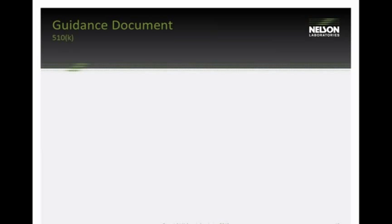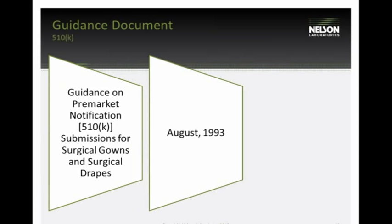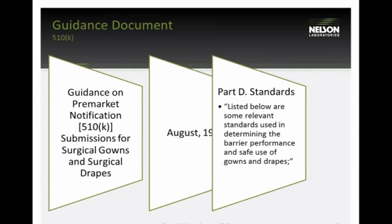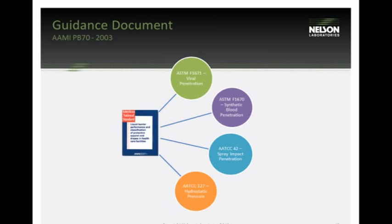Now we'll discuss guidance documents that reference these tests. The FDA's 510(k) guidance document, published in 1993, lists three of the four tests — ASTM ES21 and ES22, now called ASTM F1670 and F1671, plus hydrostatic spray. About ten years later, AAMI published the ANSI/AAMI PB70 document, which gives more direction on pass/fail results, what should be tested, and where samples should be taken from gowns and drapes.